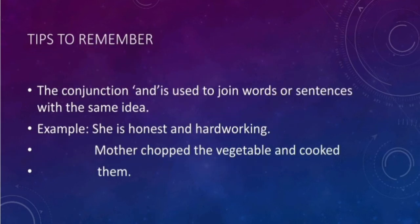Tips to remember. The conjunction 'and' is used to join words or sentences with the same idea. For example: 'She is honest and hard working' — honesty and hard work are qualities of the same person. 'Mother chopped the vegetables and cooked them' — chopping and cooking are the same idea.